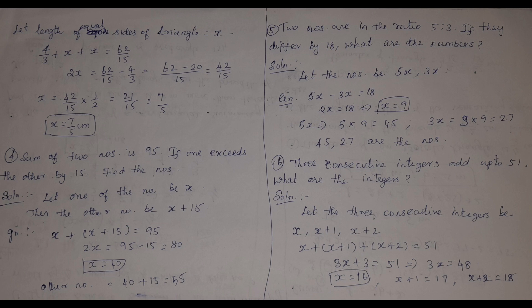Sixth problem: 3 consecutive integers add up to 51. What are the integers? Let the 3 consecutive integers be x, x+1, x+2. Adding them: 3x + 3 = 51, so x = 16. The answer is 16, 17, and 18.